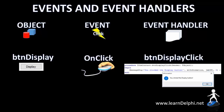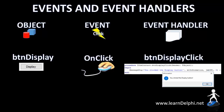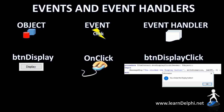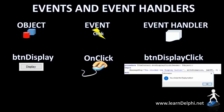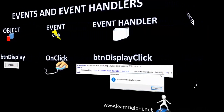Here, we only looked at one object — a button — and we only looked at one event, which is the onClick event. But objects may also have many other events. An object normally has one default event, but it may also have several additional events. Let's now look at the default events of an object.